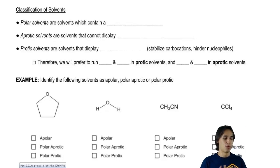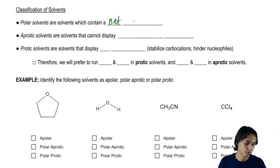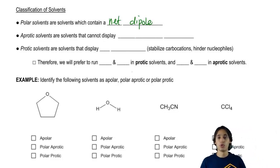You still have to remember that. Polar solvents are just the same way that we determine what a polar solvent was at the beginning when we talked about dipoles. It's the same thing here. It's a molecule that has a net dipole. So just go ahead and write that down. Molecules with net dipoles would be polar solvents.